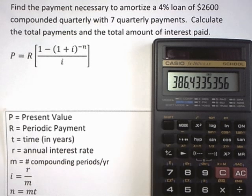Find the payment necessary to amortize a 4% loan of $2,600 compounded quarterly with seven quarterly payments. Calculate the total payments and the total amount of interest paid.